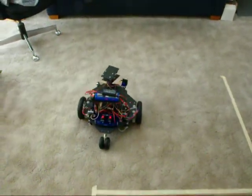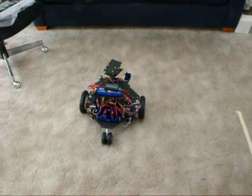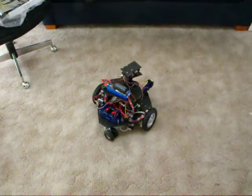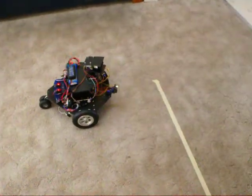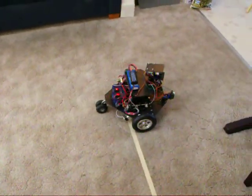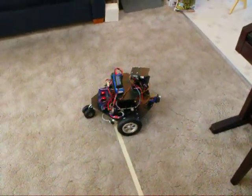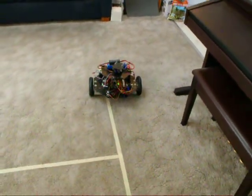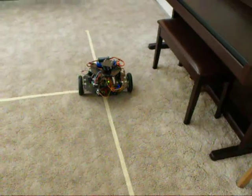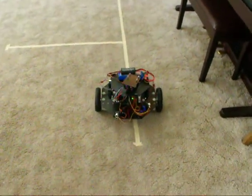It can go in reverse, but having the tail wheel in front makes it not as accurate. Pretty well aligned with the line there. Of course, we're on carpet, so we just get a little bit of slippage.